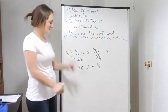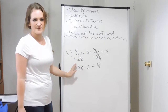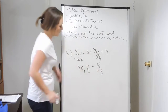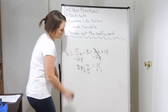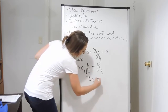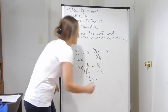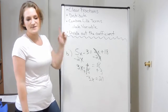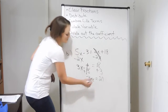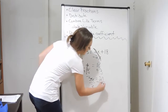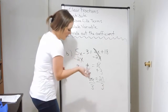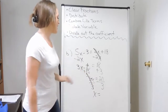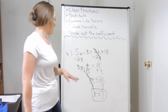Now I have the variable on the left-hand side, so I need to move my numbers to the right-hand side. Here I have a minus 3 — I do the opposite and add 3 to both sides. Negative 3 plus 3 cancels, and 3x equals 18 plus 3, which is 21. Our last step is to divide out the coefficient. This 3x is 3 times x, so we divide both sides by 3. On the left, 3 divided by 3 cancels, leaving x. On the right, 21 divided by 3 is 7. So x equals 7.